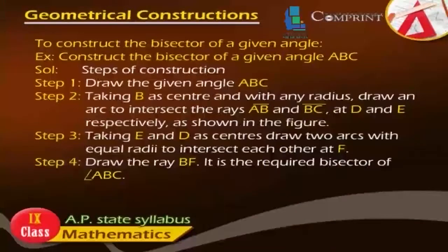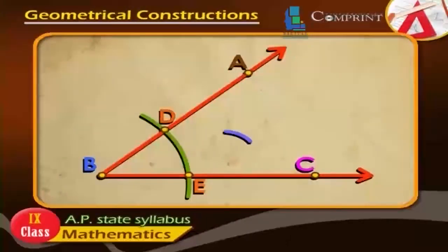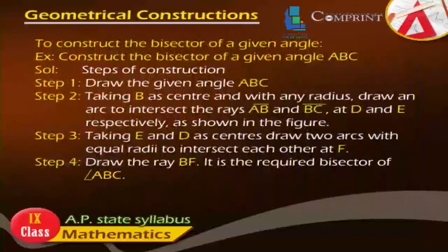Step 3: Taking E and D as centers, draw two arcs with equal radii to intersect each other at F. Step 4: Draw the ray BF. It is the required bisector of angle ABC.